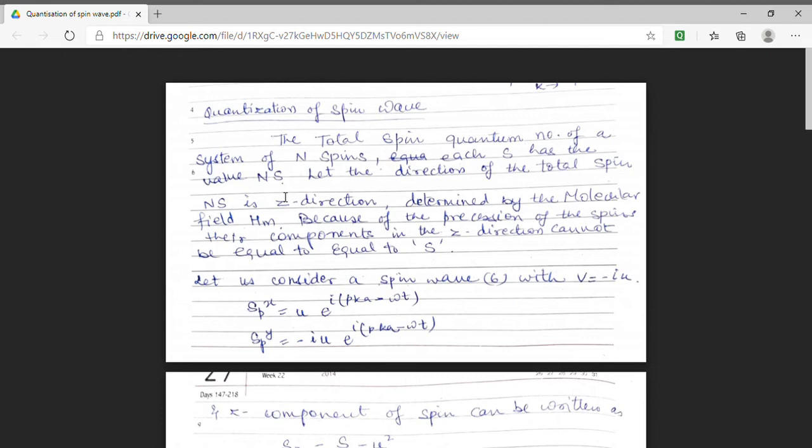Now, as we know that the total component cannot be along any particular direction because there is always precession of spins. So we cannot take the total S component to be equal to SZ. There will be some component along X as well as Y direction.